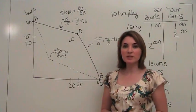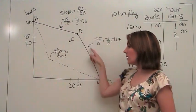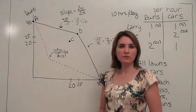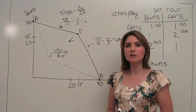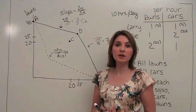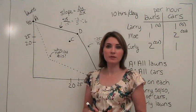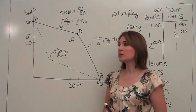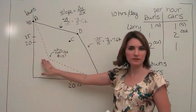Notice that our graph has a particular shape, where it's bowed out away from the origin point. This is pretty typical for our production possibilities frontier, because it represents the nature of the trade-offs that economies generally face. Let's think about why the production possibilities frontier generally looks like this, and not like this.